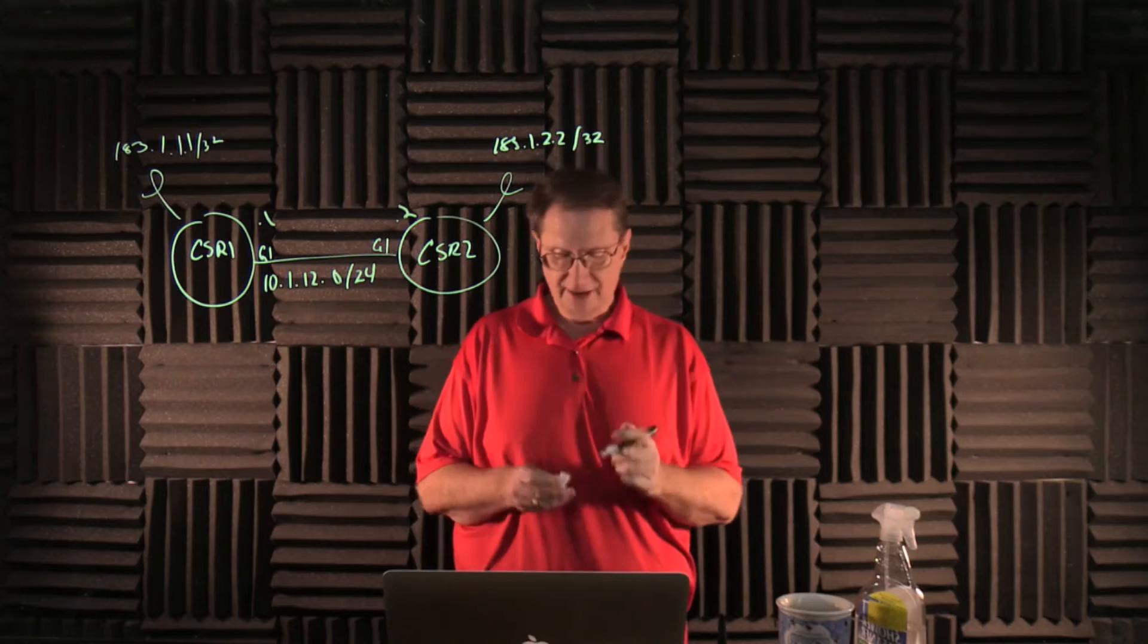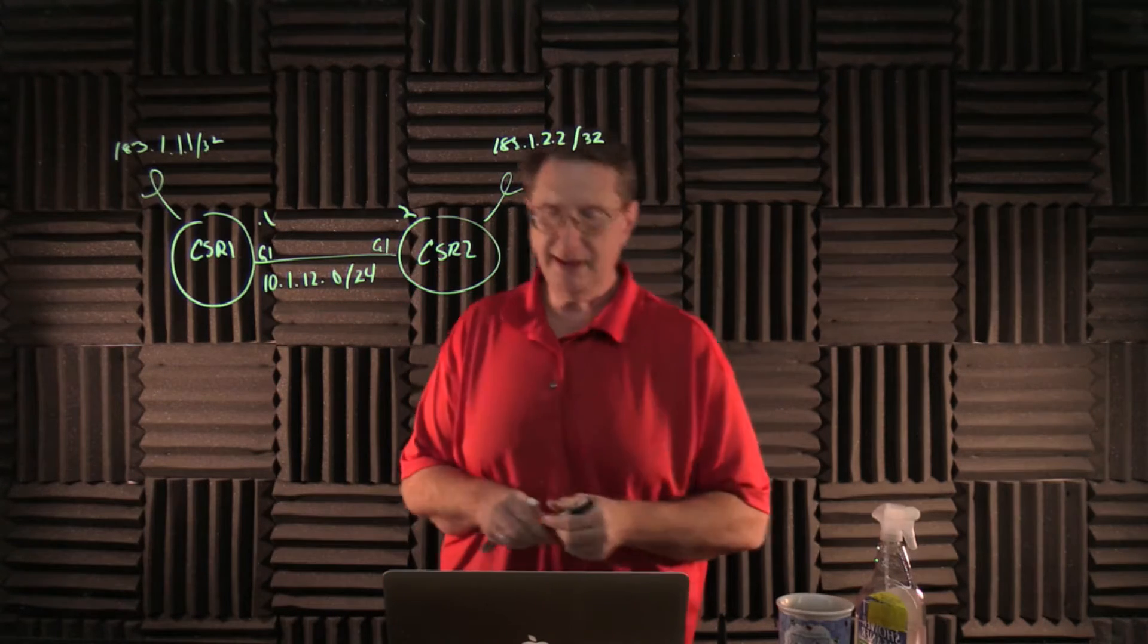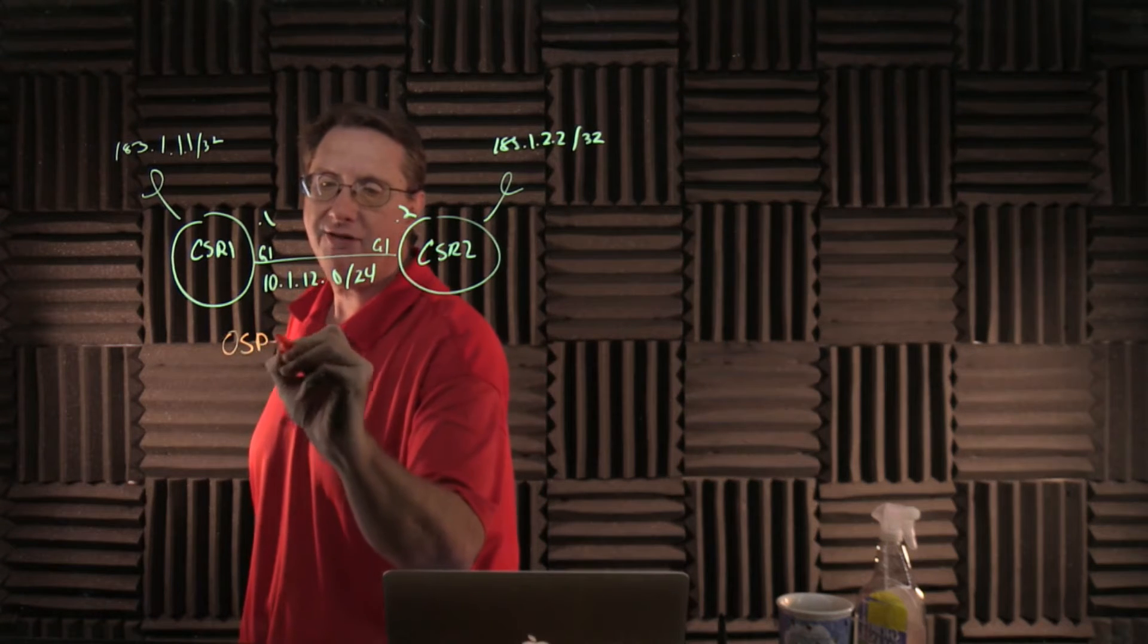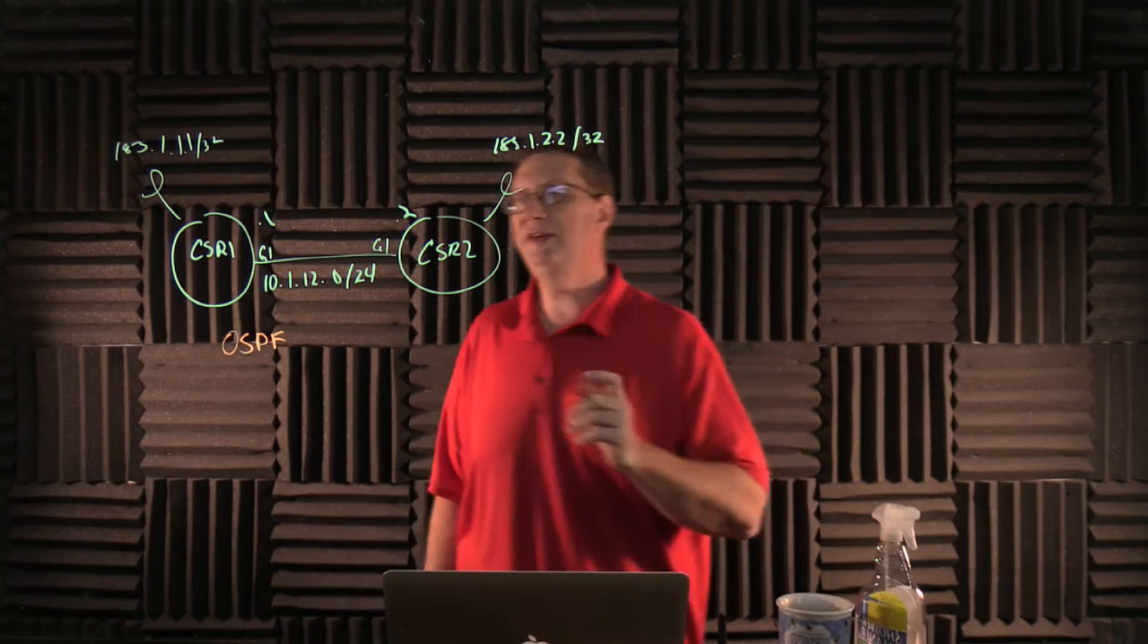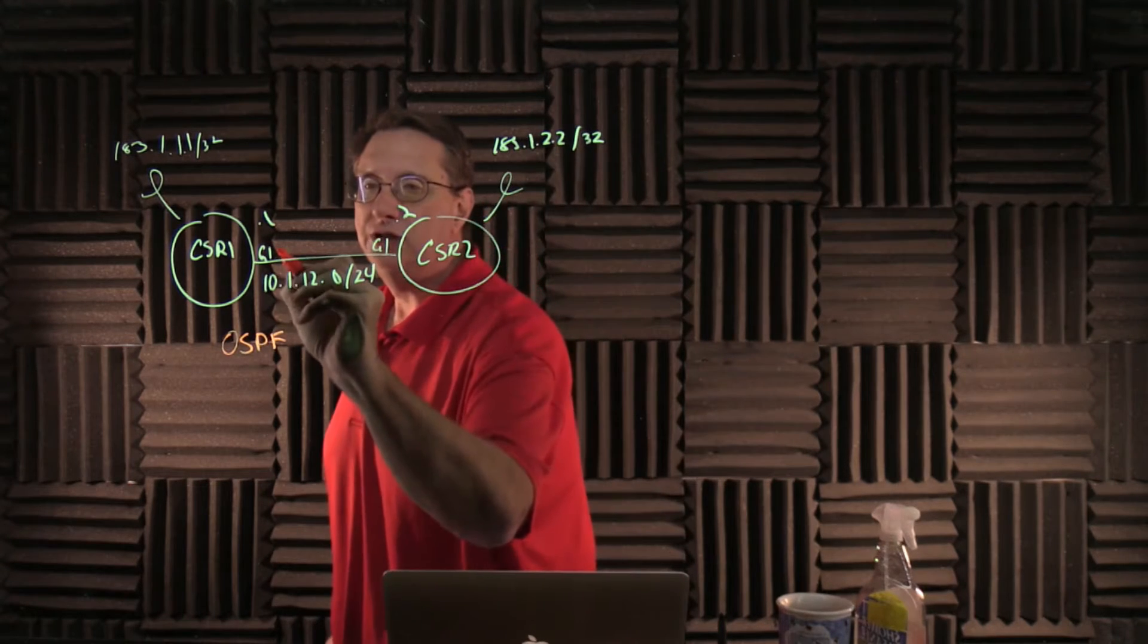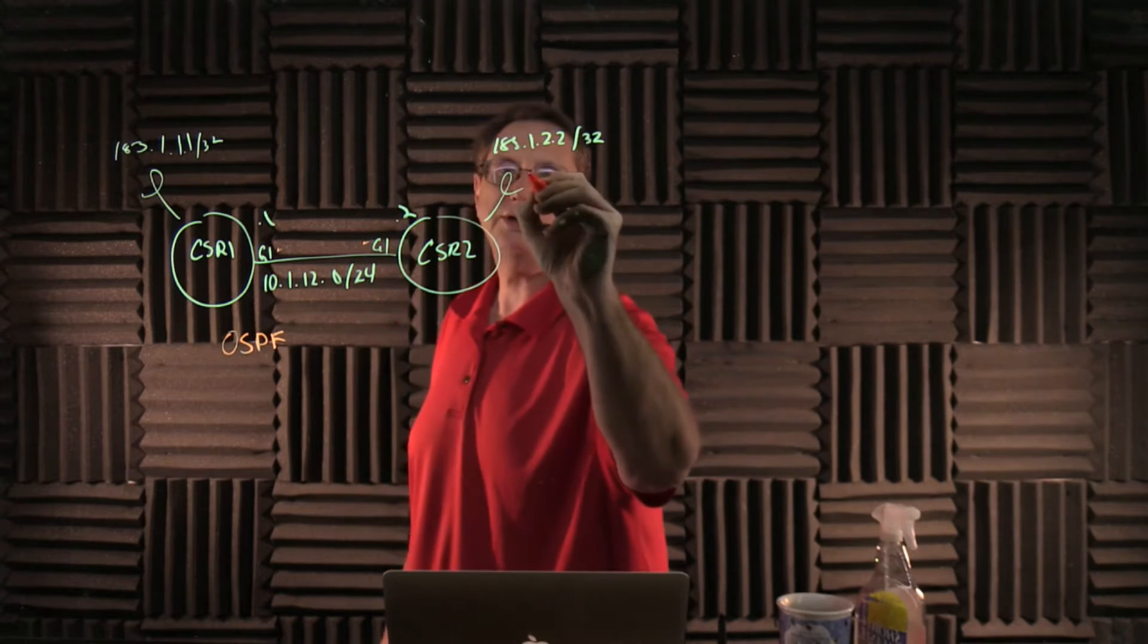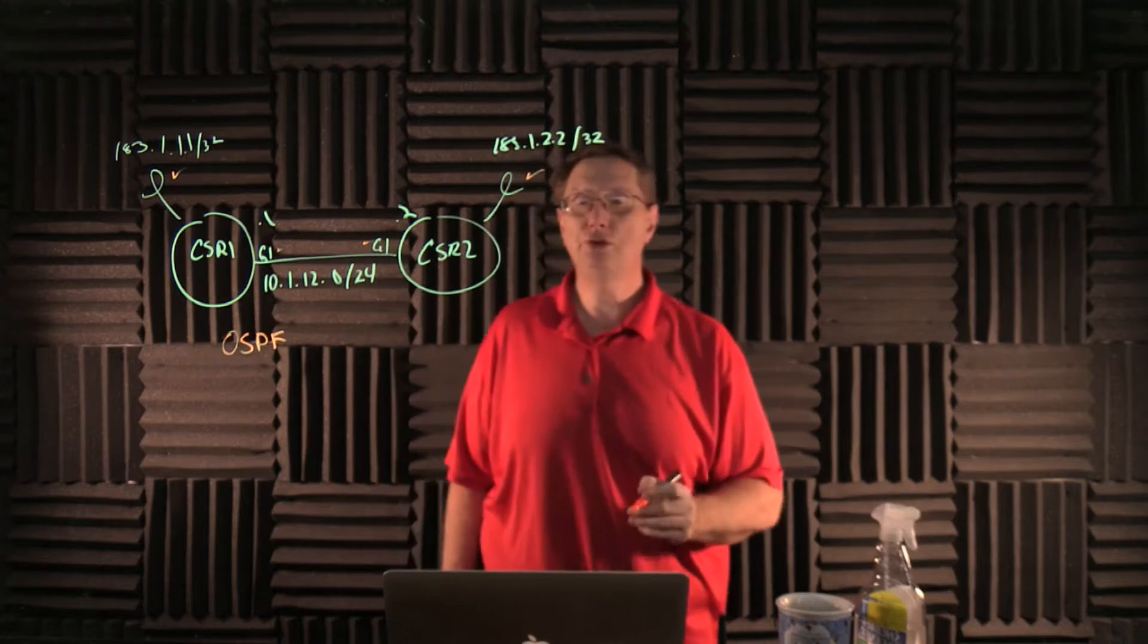This is already set up inside our environment, but what we do want to do is come in here and run Open Shortest Path First as a routing protocol across these links. So I want to use G01 on both devices and also advertise both loopback addresses into the routing protocol.